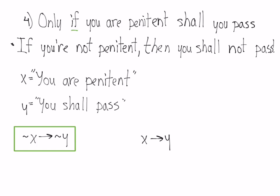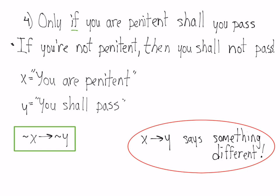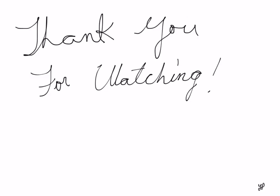It may be tempting to write x implies y, but that actually says something different, and what it says is not correct. For example, if I say 'only tall people play in the NBA,' I am not saying that all tall people play in the NBA. Thank you for watching.